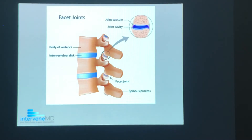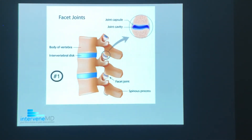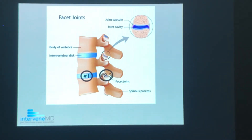Here's a side view of the spine showing the joint on the left side of the spine. There are three points of contact between each vertebral body or backbone. The first point of contact is through the disc, and contacts two and three are through the left and right facet joints.